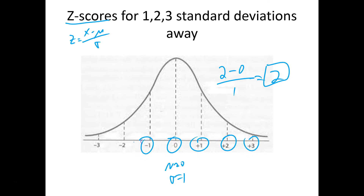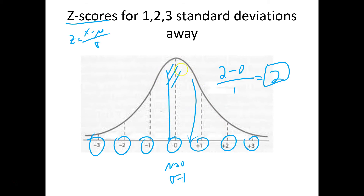We're going to learn some harder ways of finding probabilities today where you won't be able to use the empirical rule. Right now all we can do is use exact values and find the area between them. But if we have values that don't land exactly on standard deviation marks, we'll need to use z-scores because they're standardized over any normal curve.